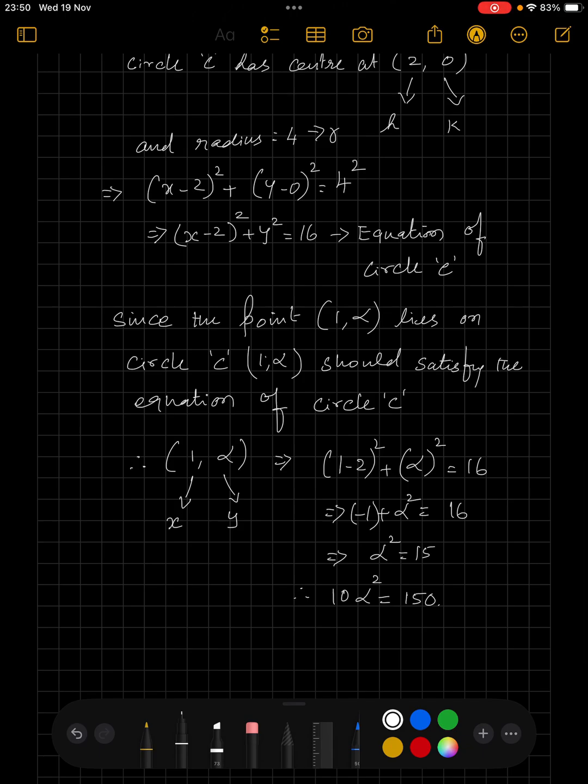We have come to the final part of the solution. Since the point 1 comma alpha lies on the circle C, 1 comma alpha should satisfy the equation of circle C.